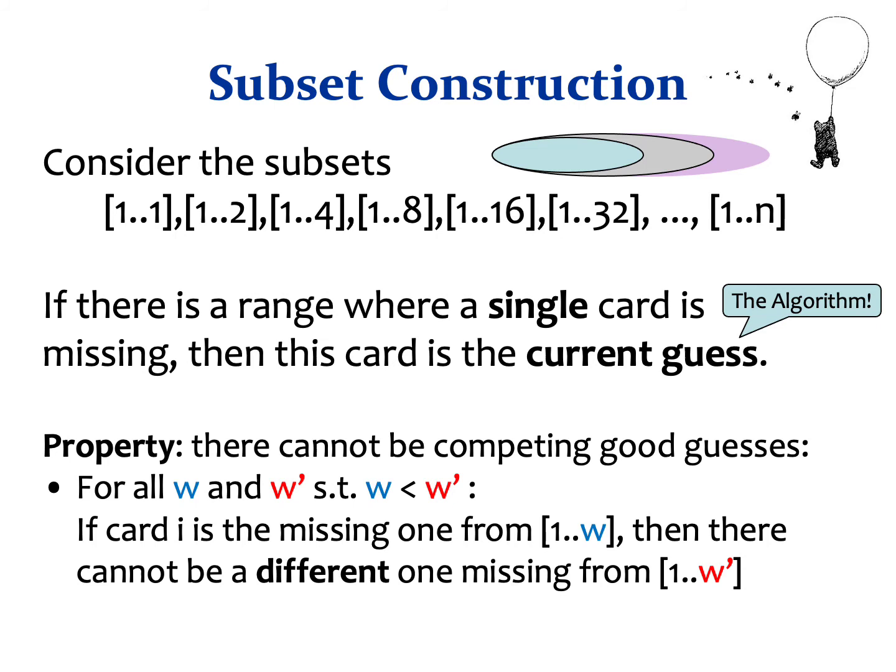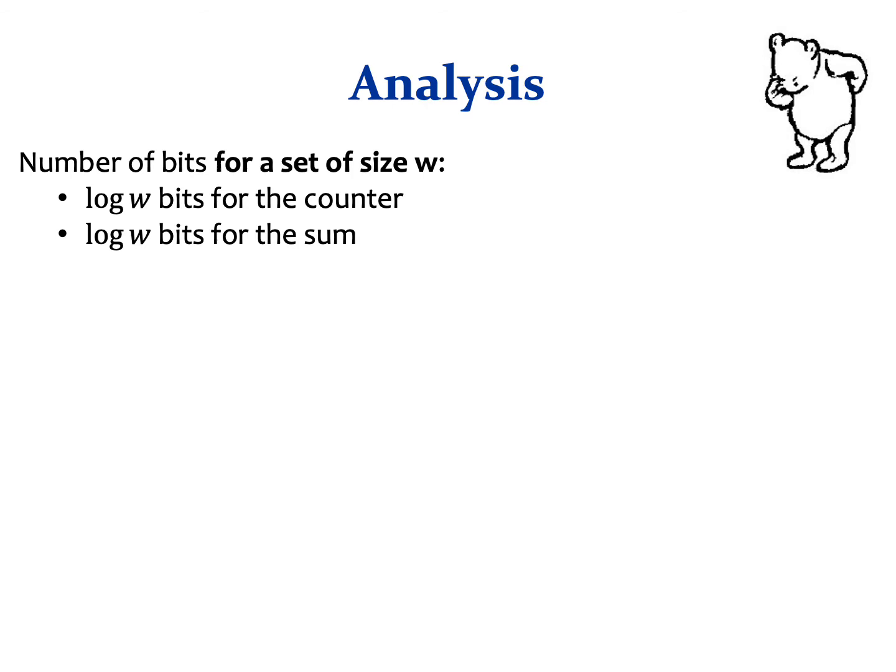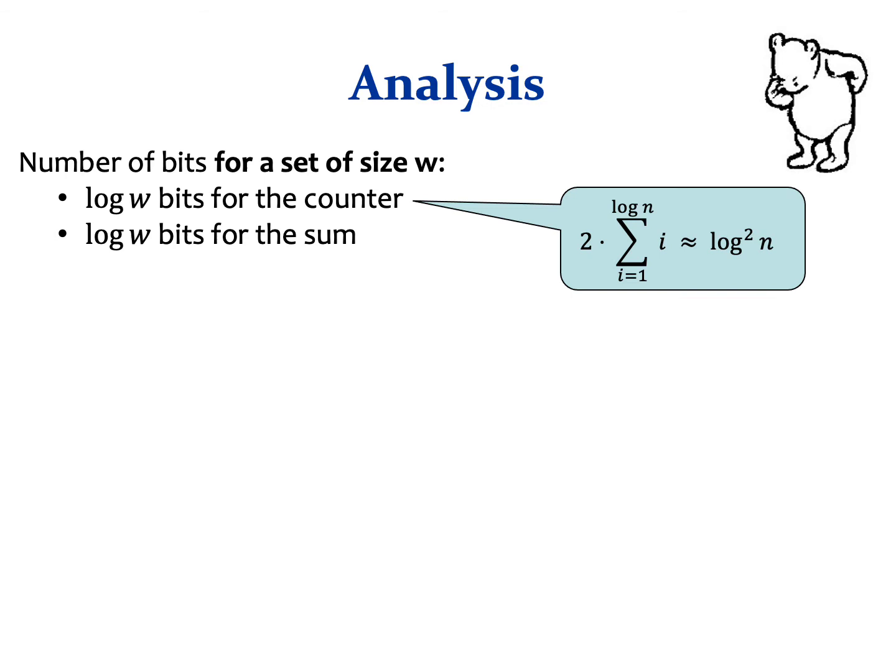In terms of space, each subset of size w requires log w bits for the counter and log w bits for the sum. Since there are log n subsets, tracking these ranges requires roughly log squared n bits of memory.